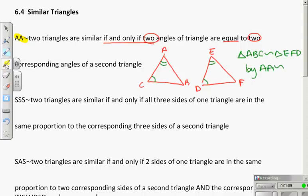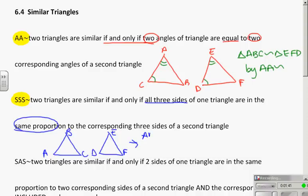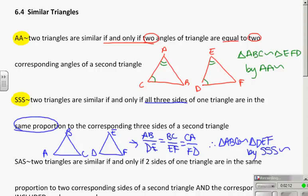Our second similarity triangle looks a lot like one of our congruence ones, and that is side-side-side, except in this case we're talking about two triangles are similar if and only if all three sides of one triangle are in the same proportion to the corresponding sides of a second triangle. So in our picture, instead of being able to mark congruence on the sides, we're going to actually end up writing something like this: that AB corresponds to DE in the same ratio that BC corresponds to EF in the same ratio that CA corresponds to FD. Therefore, triangle ABC is going to be similar to triangle DEF by side-side-side similarity.